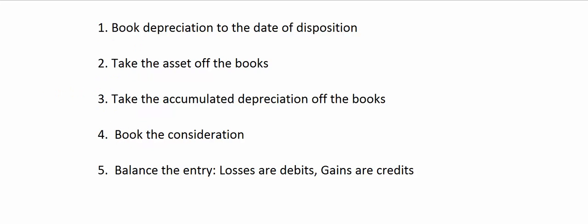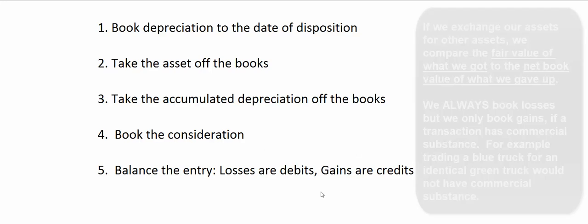To finish: when we get rid of a piece of equipment or a building, we book depreciation to the date of disposition, we take the asset off our books with a credit, we take the accumulated depreciation off our books with a debit, we book the consideration — cash, note receivable, or maybe a trade property — and then we balance the journal entry. Losses are recorded as debits and gains are recorded as credits. If we sell it for more than net book value, that's a gain; if we sell it for less than net book value, that's a loss.